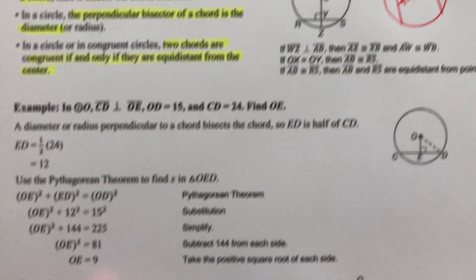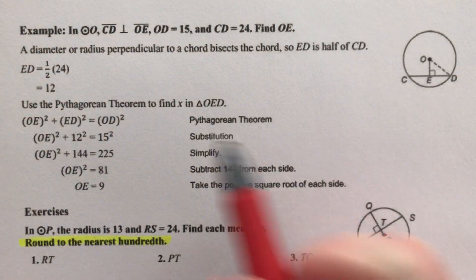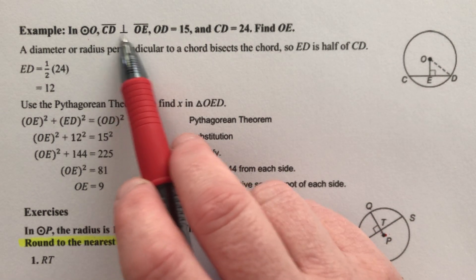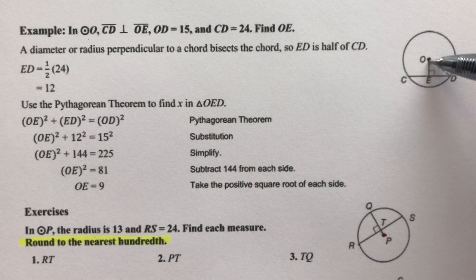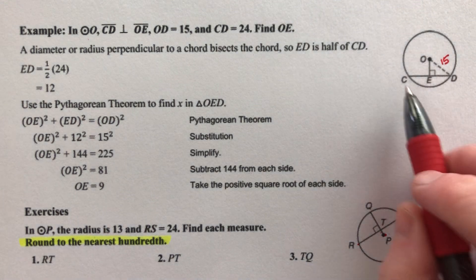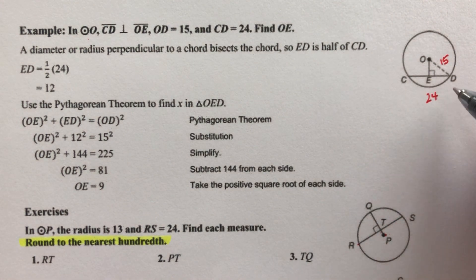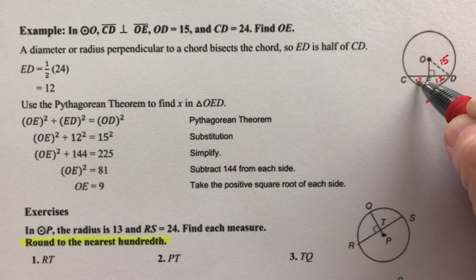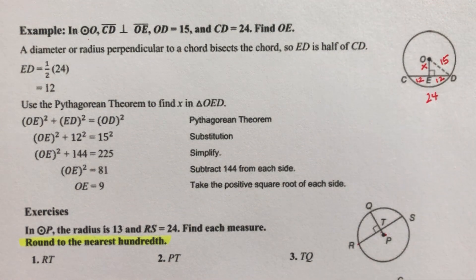Moving on to an example. In circle O, CD is perpendicular to OE. CD is the chord, and OE is part of the diameter. OD is 15 units, and CD is 24 units. Since OE is perpendicular to CD, it cuts the chord in half — 12 and 12. We need to find the measure of OE.